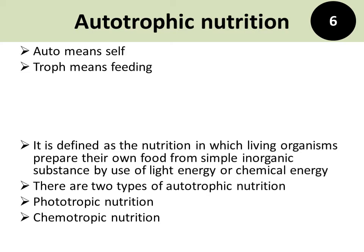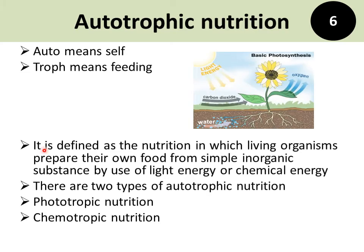Let's discuss the first type of nutrition which is autotrophic nutrition. The word autotrophic is derived from two Greek words: auto and troph. Auto means self and troph means feeding. Autotrophic nutrition is defined as the nutrition in which living organisms prepare their own food from simple inorganic substances by the use of light energy or chemical energy. In this diagram, you can see that inorganic substances — carbon dioxide and water — are combined in the presence of light energy and chemical energy to produce carbohydrate, which is an organic substance, and oxygen.